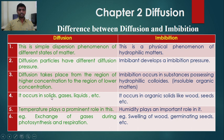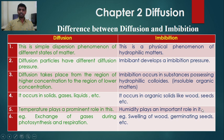Fourth difference: diffusion occurs in solids, gases, and liquids, while imbibition occurs in organic solids like wood and seeds which possess hydrophilic colloidal substances. Fifth: temperature plays a prominent role in diffusion — an increase in temperature increases the rate of diffusion — while in imbibition, humidity plays an important role. During the rainy season, wooden doors get jammed due to swelling because of humidity.